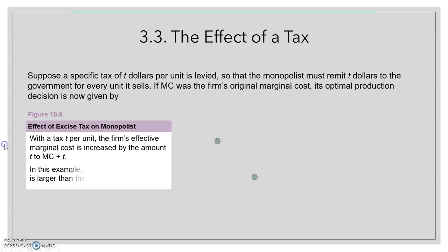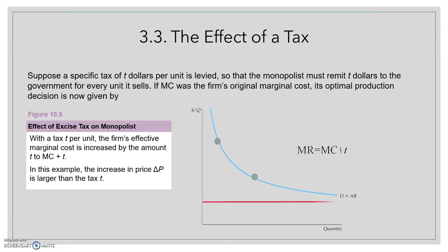But first, remember that in perfect competition, we saw that when a specific tax per unit was imposed, the market price raised by an amount that was lower than the tax.